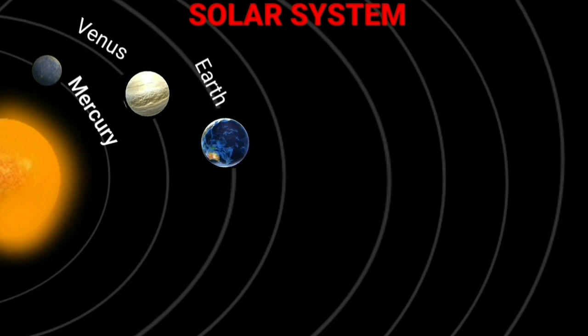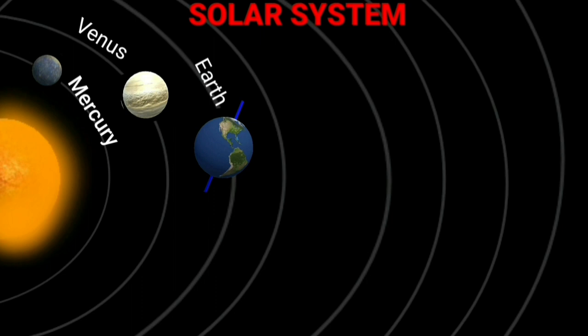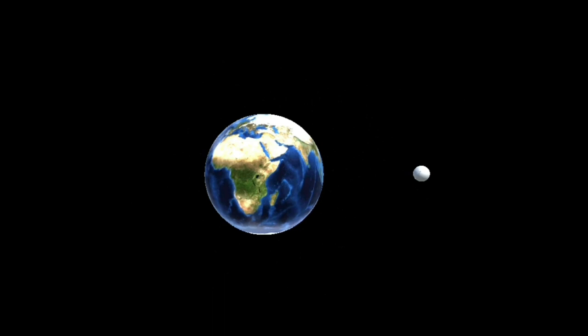The tilt is responsible for the change of seasons on the Earth. The Earth has only one moon. From space, the Earth appears blue-green due to the reflection of light from water and landmass on its surface.